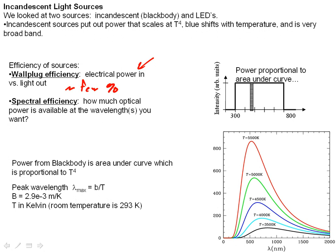Another efficiency that we're very interested in is spectral efficiency. Spectral efficiency is how much optical power you have available at a particular set of wavelengths. Certainly in your blood detection experiment, you need to excite your sample with blue or blue-green or blue-violet light. So anything in the yellow-green, the orange, the red, the infrared is going to be wasted light.